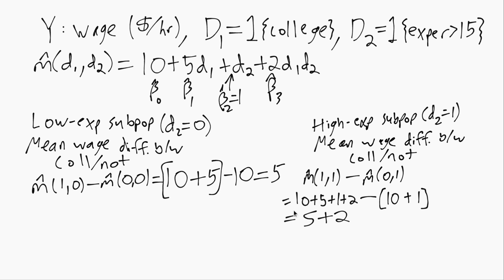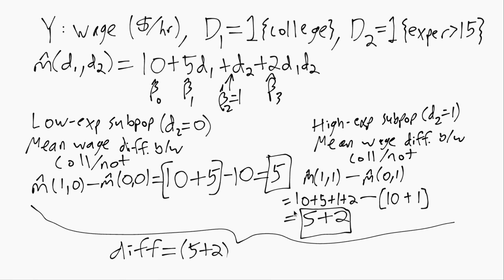Finally, we can see if we take the difference of these two intermediate results we've got, then we'll have 5 plus 2 minus 5. So those 5s from the D1 term will cancel out, and all we're left with is 2, which was our estimated coefficient on the interaction term.